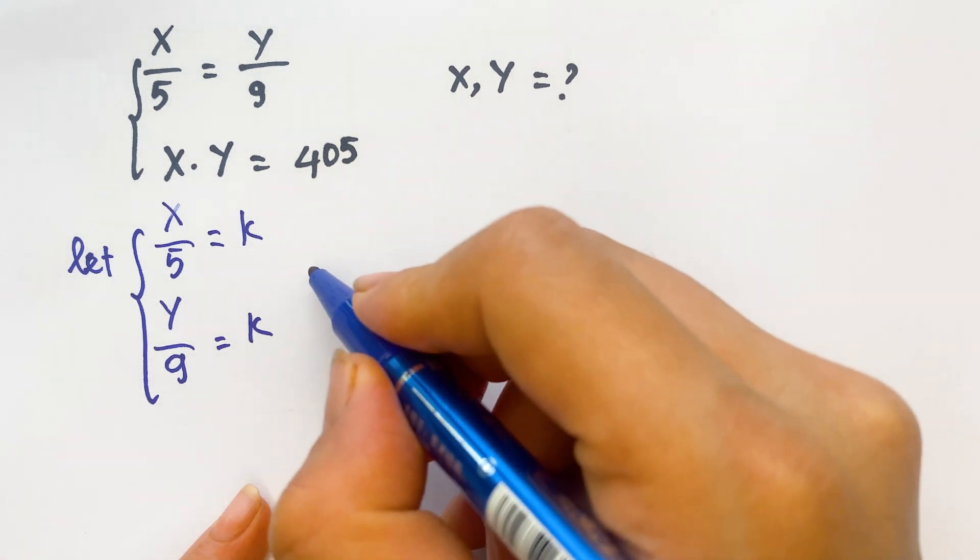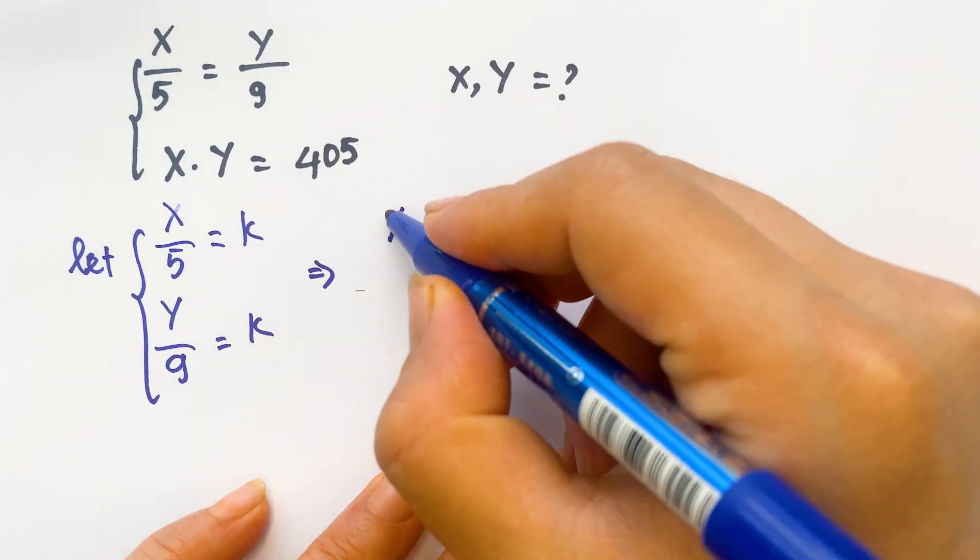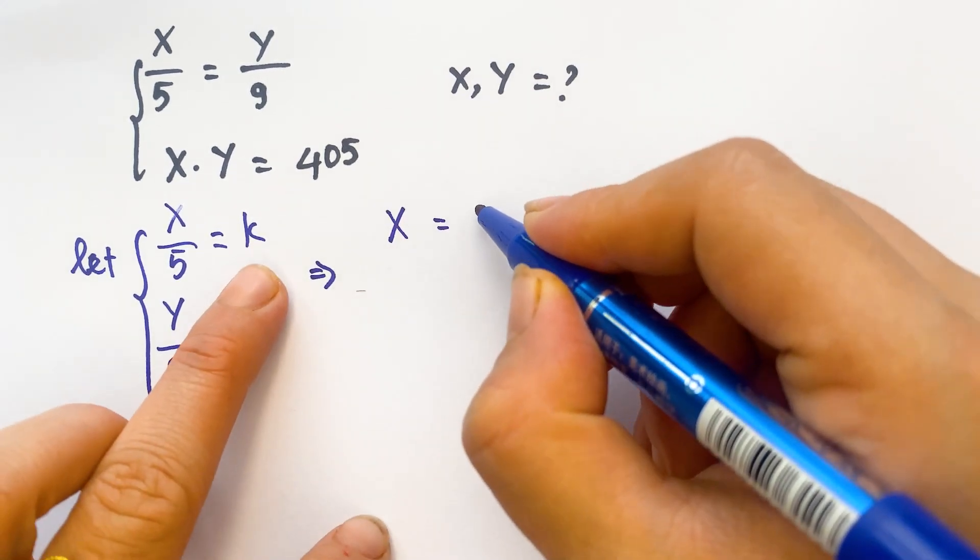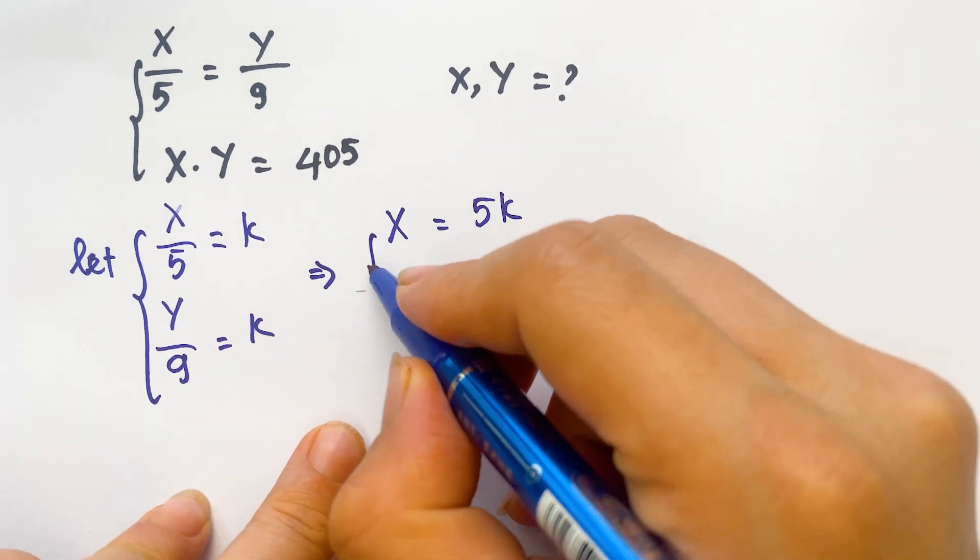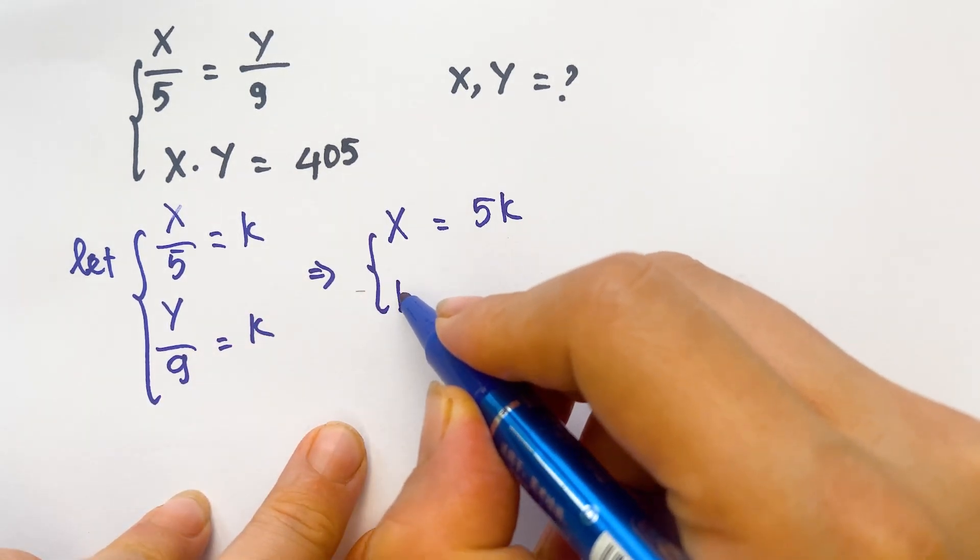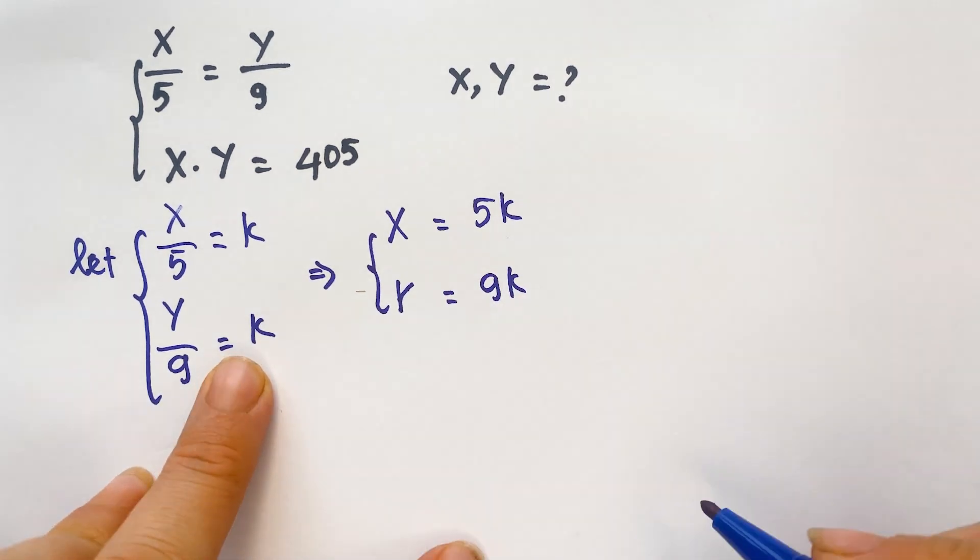And then we can have, for the first equation, you have x equals 5k. And then for the second equation, you can have y equals 9k.